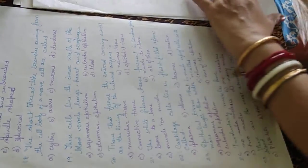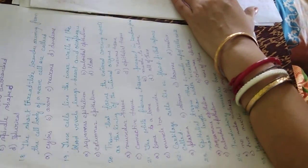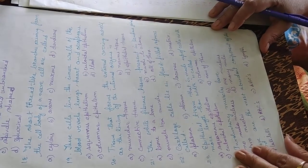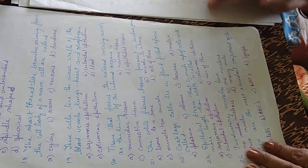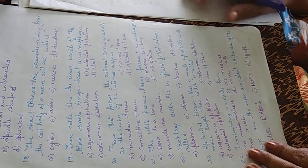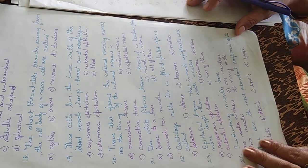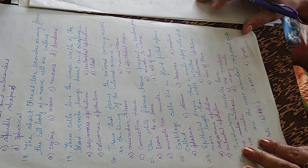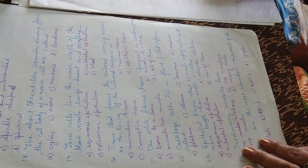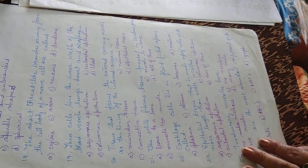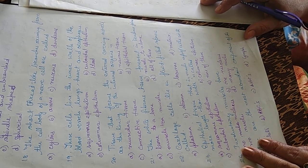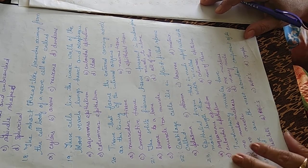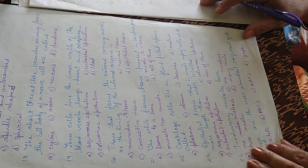Twenty-second question: cartilage cells lie in the fluid-filled spaces called plasma, stroma, lacunae, or matrix. The answer is C — lacunae. Cartilage cells lie in the fluid-filled spaces called lacunae.